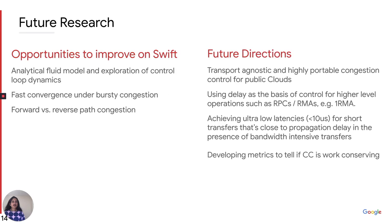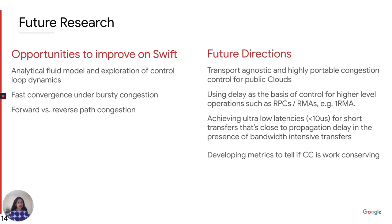A few remarks on future research. First, there are multiple opportunities to improve Swift itself, such as faster convergence on bursty or transient congestion and developing theoretical frameworks for exploring the control loop dynamics. Besides that, there are multiple directions for future research such as building highly portable and transport-agnostic congestion control for public clouds. We also believe delay is useful for controlling higher-level operations such as RPCs or RMAs, as shown in the one-RMA paper being presented at this conference. Finally, to achieve ultra-low latency for short transfers matching raw propagation delay in the presence of higher-bandwidth flows, we will require newer techniques.